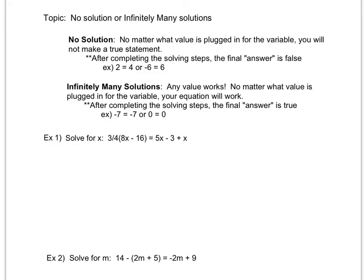So for that reason, or kind of a way to remember that, is that the answer that you get after you complete your steps is something funky, like 2 = 4, -6 = 6, or 0 = 7, something that's never true.